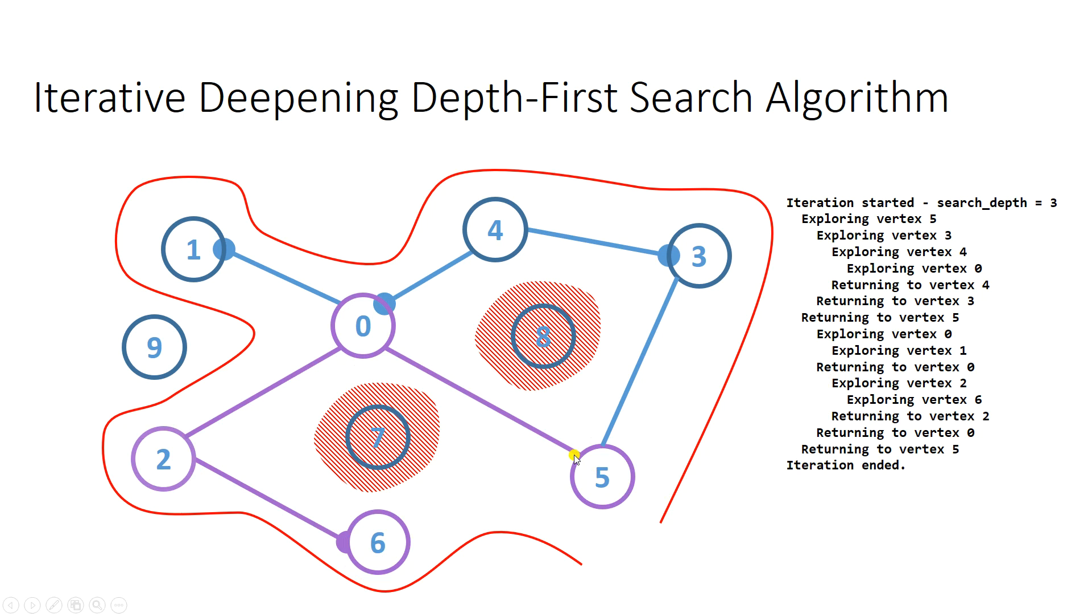Just mark the shortest search path because the IDDFS produces the shortest search path and now we have our search path containing 5, 0, 2 and 6.